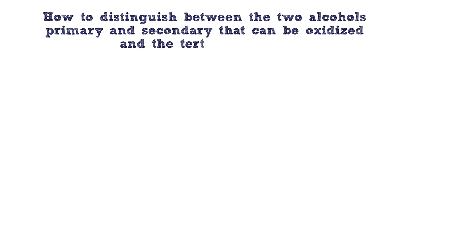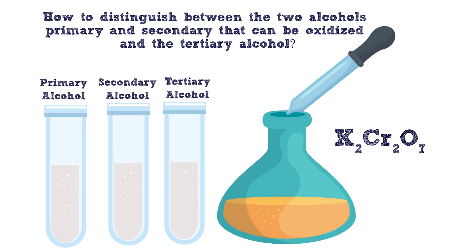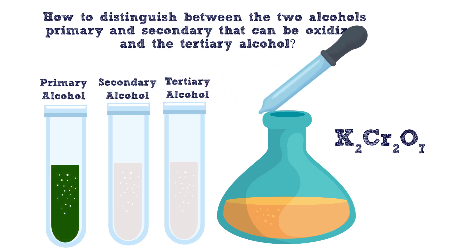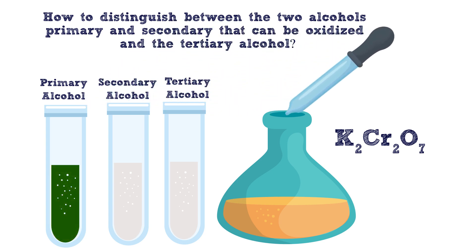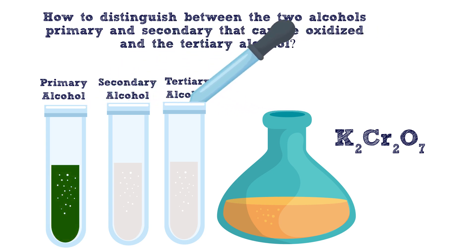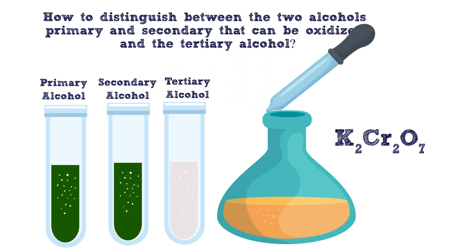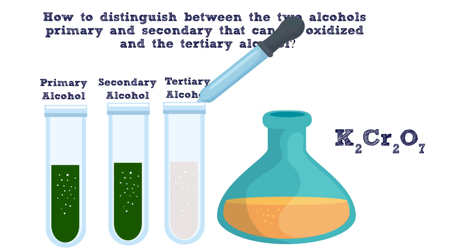We can distinguish between the primary and secondary alcohols and the tertiary alcohols. If we add potassium dichromate and the color changes into green, this means we have either a primary or secondary alcohol. But for the tertiary alcohols, no change of the color of the potassium dichromate will be observed.